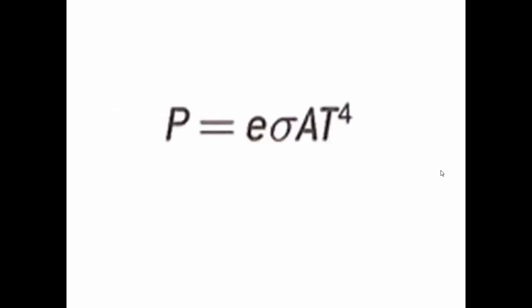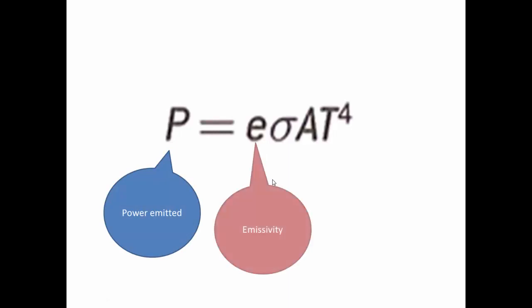Here is the equation applying emissivity. P is the power emitted by the object, E is the emissivity, and sigma is the constant that goes with the Stefan-Boltzmann equation.